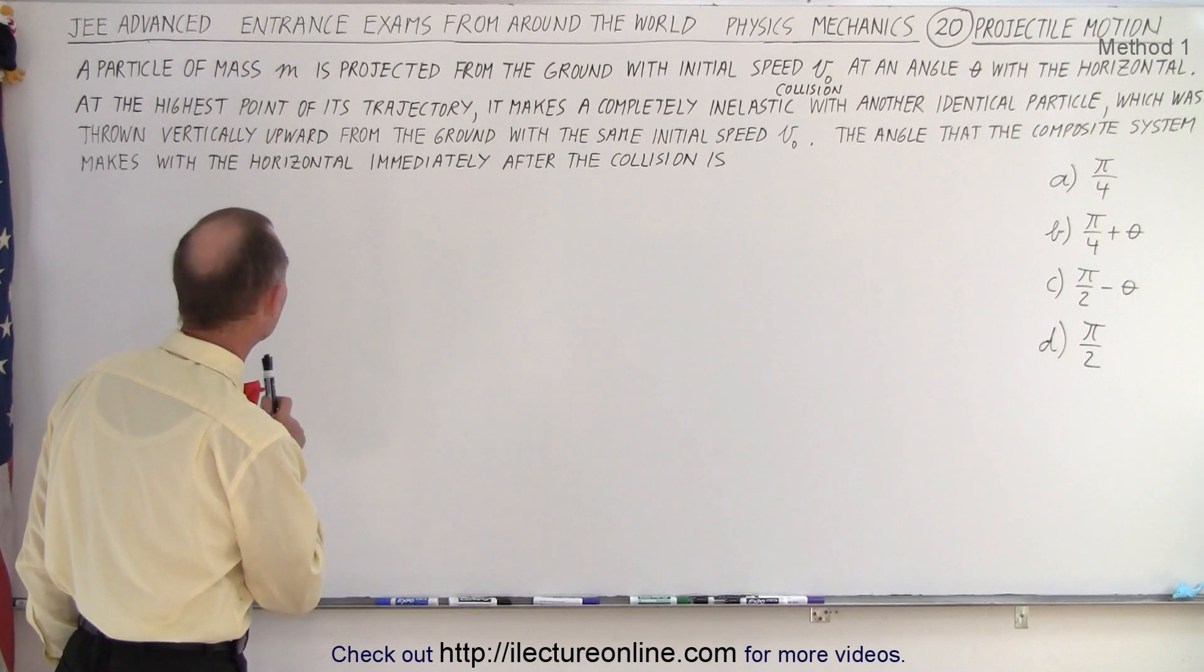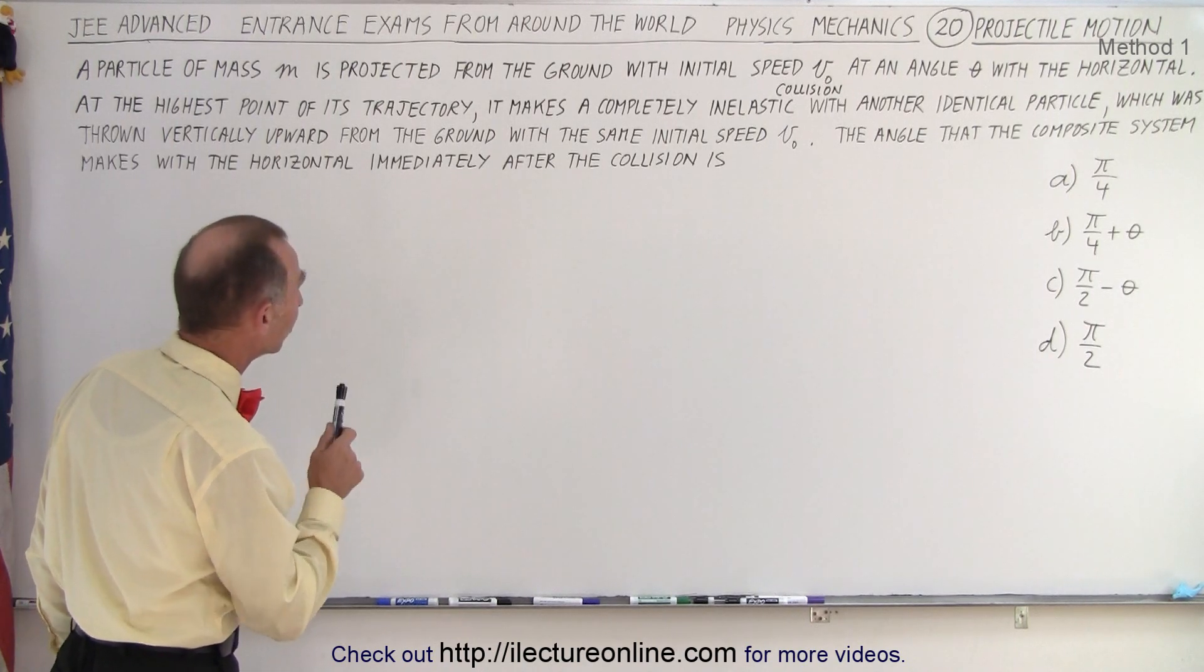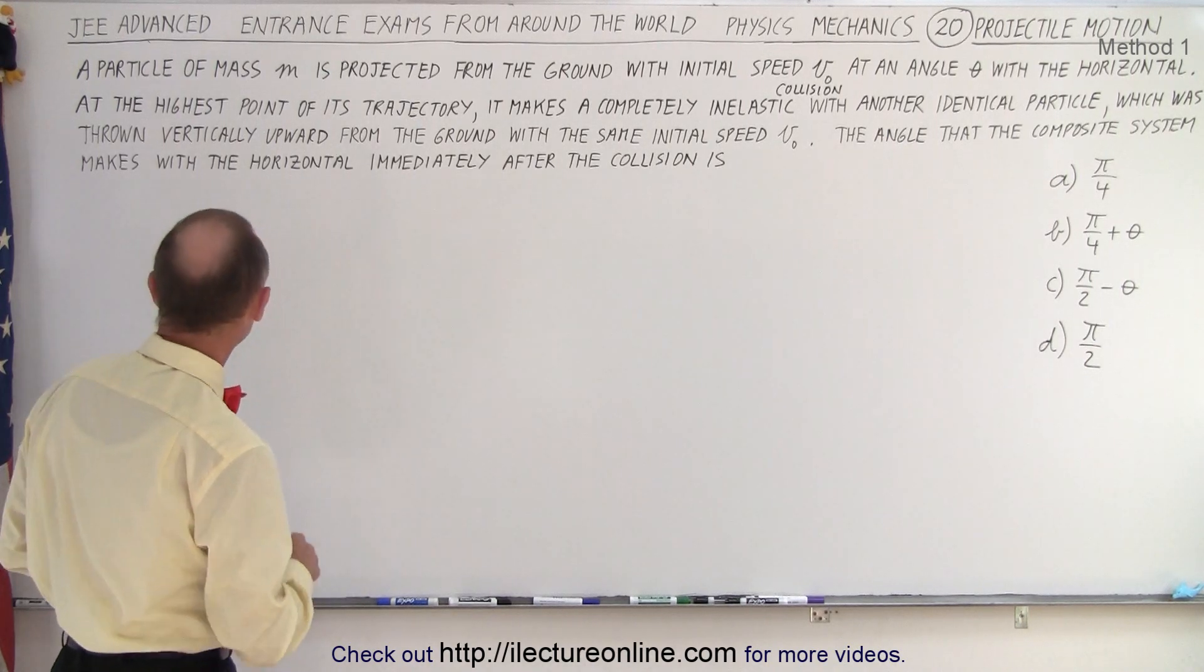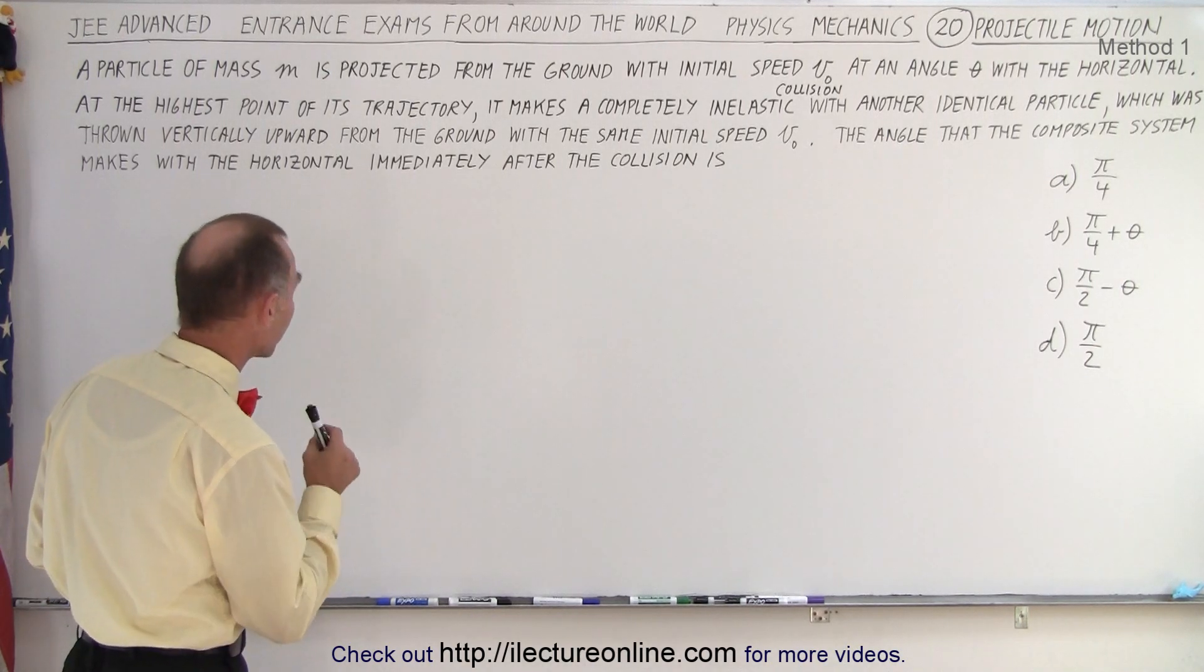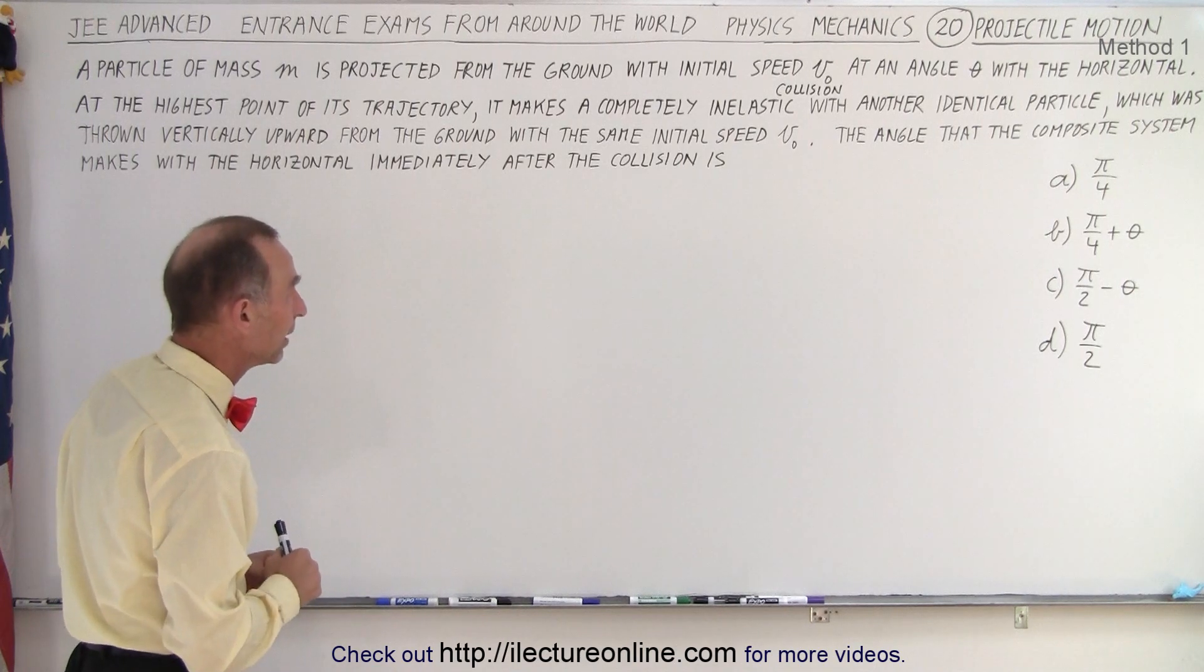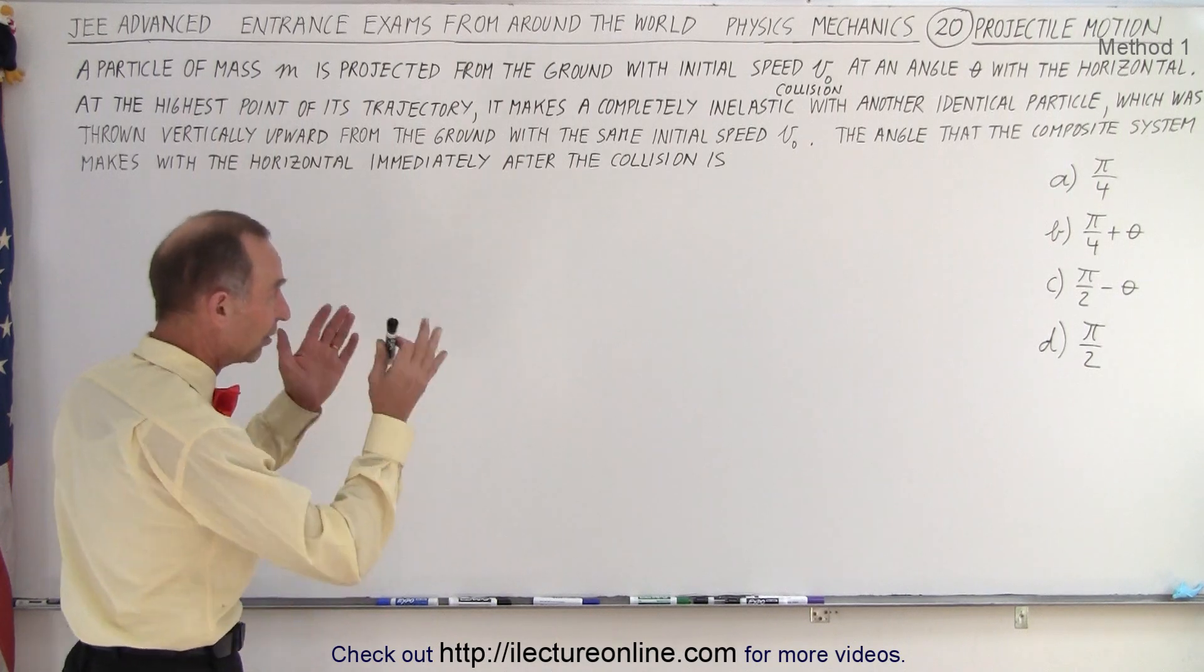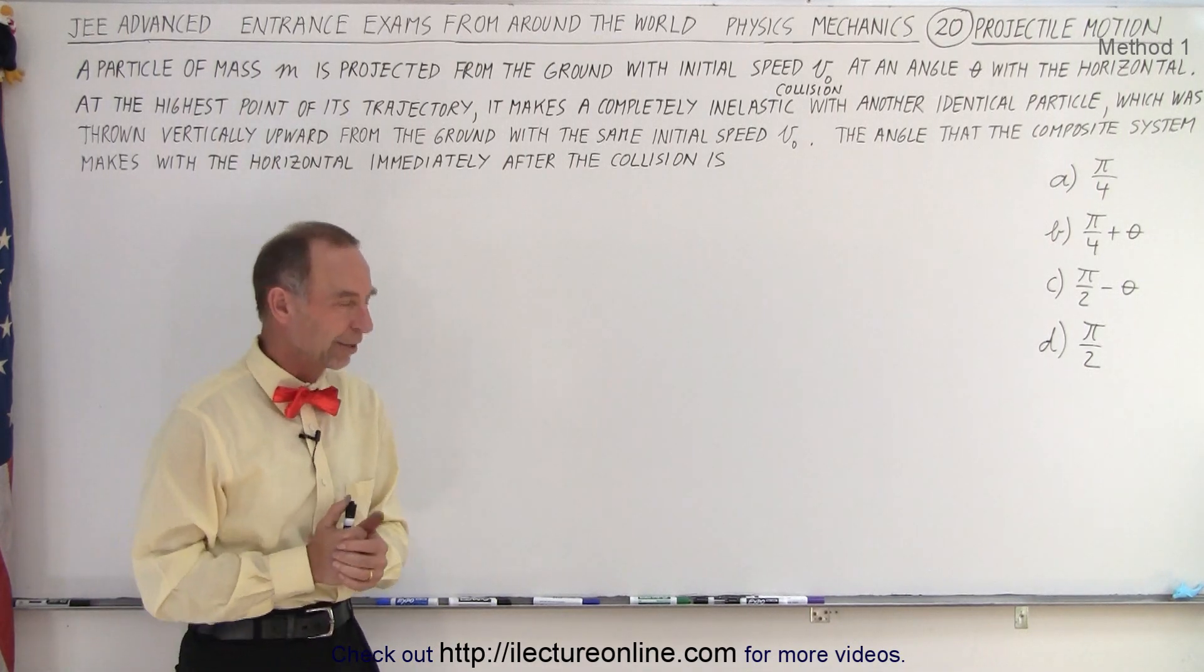At the highest point of its trajectory, it makes a completely inelastic collision with another identical particle, which was thrown vertically upward from the ground with the same initial speed. The angle that the composite system makes with the horizontal immediately after the collision is. And they give us these four possible answers.